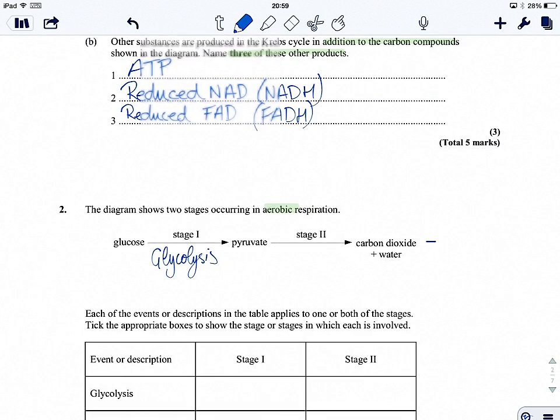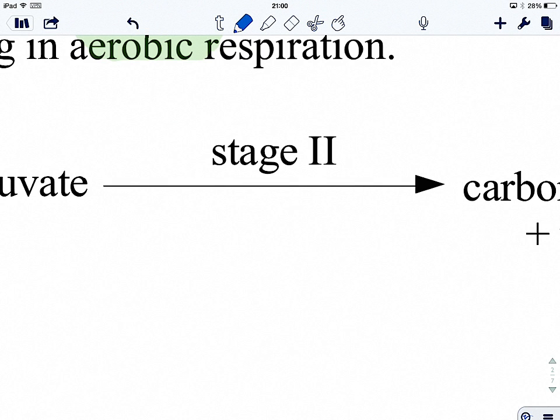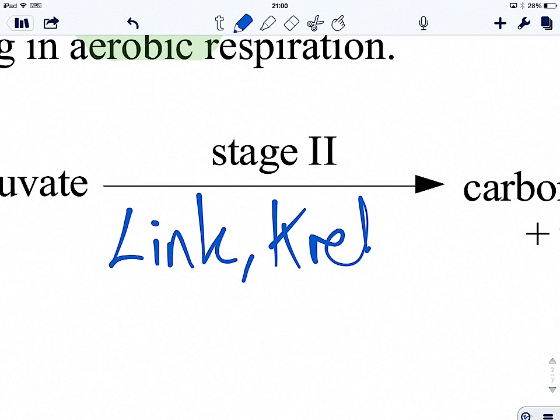And then the place where people get confused is this second stage. This second stage is where pyruvate is converted to carbon dioxide plus water. Now most people think, oh yeah, that's link reaction or that is Krebs cycle. It's not. It's link reaction, Krebs cycle. And because we're getting water produced, it's the electron transport chain as well. So this is link, Krebs, and ETC or oxidative phosphorylation.